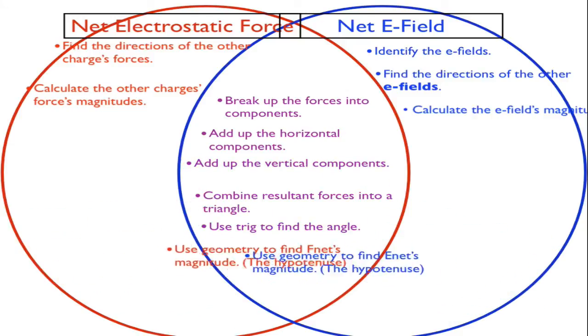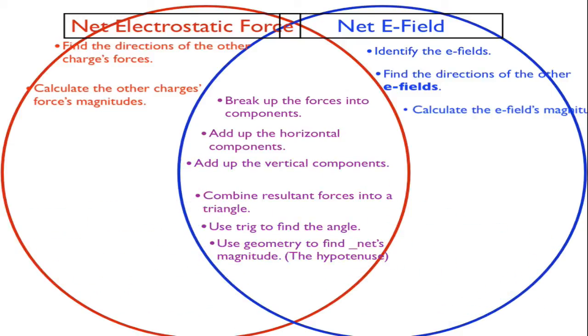I'm breaking up the forces or the electric fields into components, combining the like components, adding up the vertical components, combining the results to get a solutions triangle, and using trig to find the angle, and Pythagorean's theorem to find the length of the hypotenuse. Same process. What's different is how I calculate the magnitudes and how I determine those original directions.